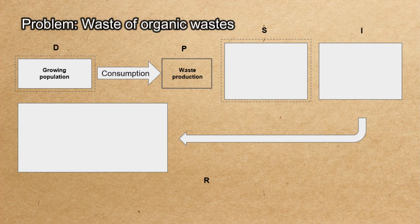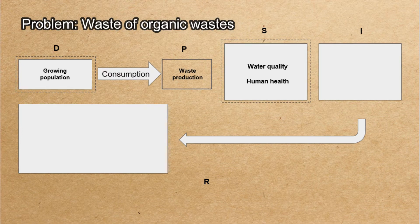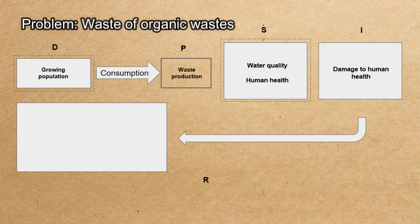Then we have the state: how does the environment change with waste production? We can notice changes in water quality or human health. Then we have impacts: what are the impacts of the changing state? If we have worse water quality and problems with human health, the impact could be damage to human health. For these impacts, states, pressures, and driving forces, we can propose responses.